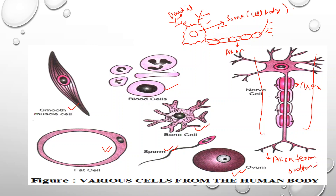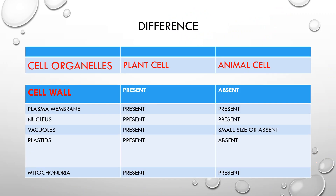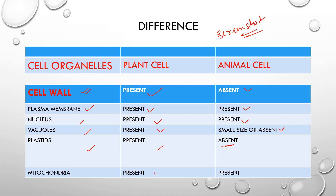Now let's look at the difference between plant cell and animal cell organelles. Cell wall is present in plant cells but absent in animal cells. Plasma membrane is present in both. Nucleus is present in both. Vacuoles are present in plant cells but absent or small in animal cells. Plastids are present in plant cells but absent in animal cells. Mitochondria are present in both.